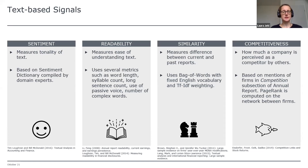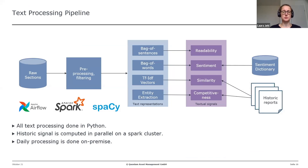Let me briefly show our text processing pipeline. We start from the raw sections, apply pre-processing and filtering steps, then process the text into different representations needed to construct the different metrics. For readability we apply a bag-of-sentences; for sentiment, a bag-of-words; for similarity, we construct TF-IDF vectors; and for competitiveness, we perform entity extraction using spaCy. Again, everything is done in Python. For similarity and competitiveness, we require input from historic reports.